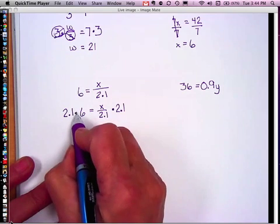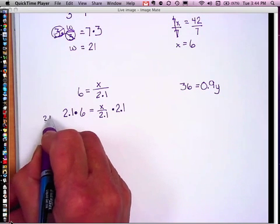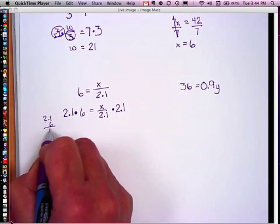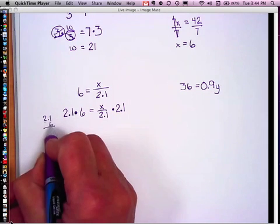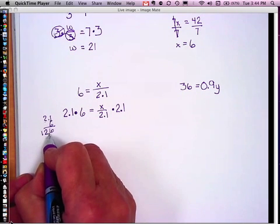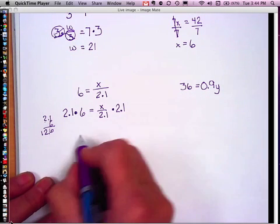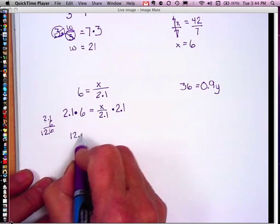So I'm now going to actually go over to the side and do 2 and 1 tenth multiplied by 6. 6 times 1 is 6. 6 times 2 is 12. I see I have one place after my decimal, so I want to move my decimal one place to the left. So my answer is 12 and 6 tenths.